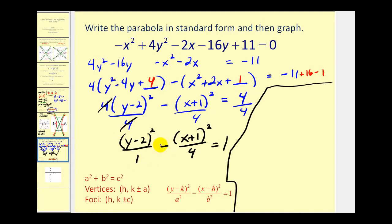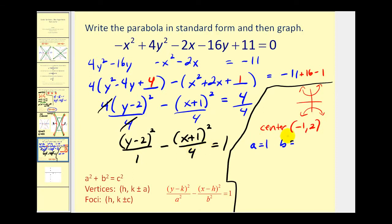Dividing everything by 4, we get (y minus 2) squared over 1 minus (x plus 1) squared over 4 equals 1. Since the y part is positive, we now have a vertical transverse axis. The center is at (-1, 2). A squared equals 1, so a equals 1. B squared equals 4, so b equals 2. C squared equals a squared plus b squared: 1 plus 4 equals 5, so c equals square root of 5, approximately 2.24.